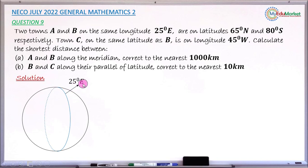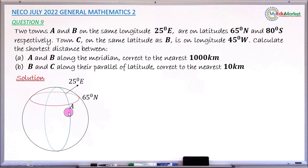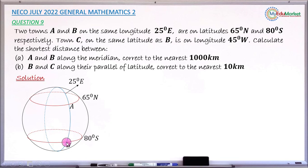Town A is on latitude 65 degrees north, so draw that latitude to locate town A — where latitude 65°N crosses longitude 25°E is the location of town A. Town B is on latitude 80 degrees south, so draw that latitude. Where latitude 80°S crosses longitude 25°E is the position of town B.